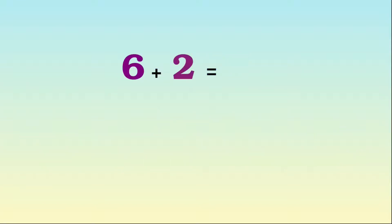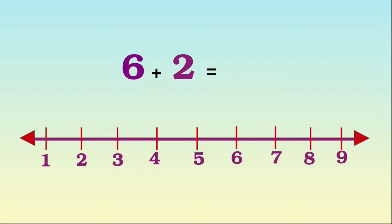Next we are going to find the sum of 6 plus 2 using number lines. So first start with the number 6. Next move 2 numbers towards the right. That is 1, 2.